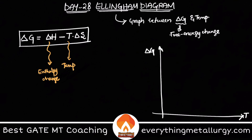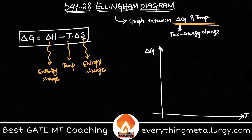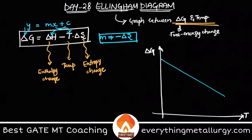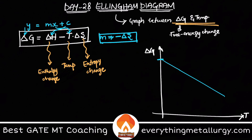ΔH is the enthalpy change, T is the temperature, and ΔS is the entropy change. If you compare this with y = mx + c (a straight line), then m is equal to −ΔS, because we are plotting ΔG on the y-axis and temperature on the x-axis. The intercept c will be ΔH — that is the intercept when T equals zero.